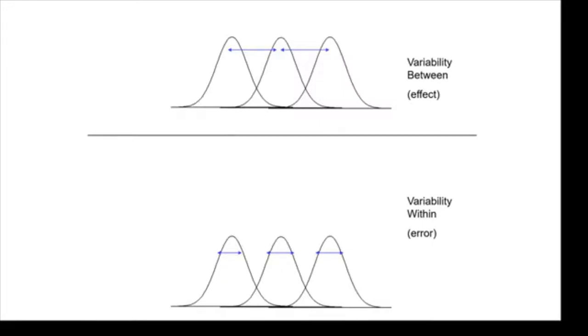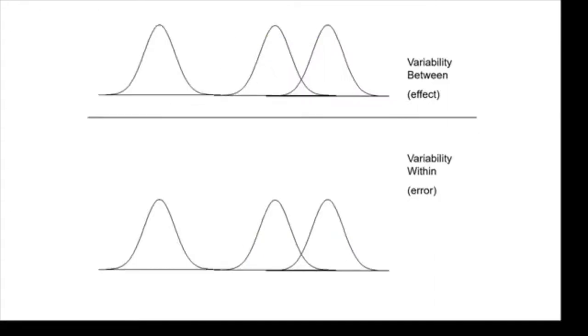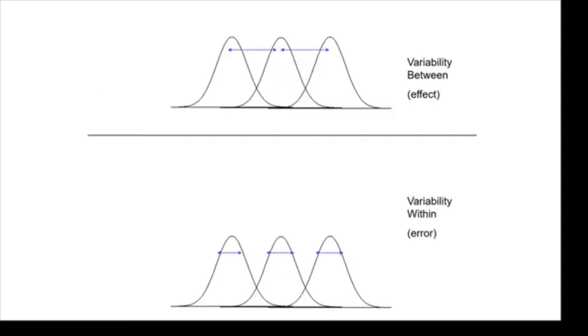So what we'll end up doing is taking that variability between and the variability within and dividing them, dividing the between by the within to come up with a number that represents the ratio of variance.